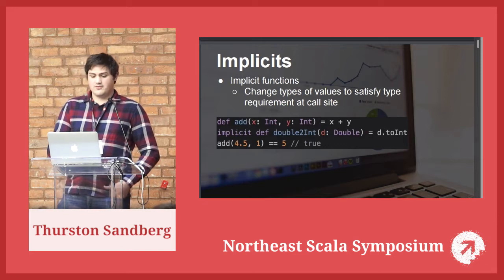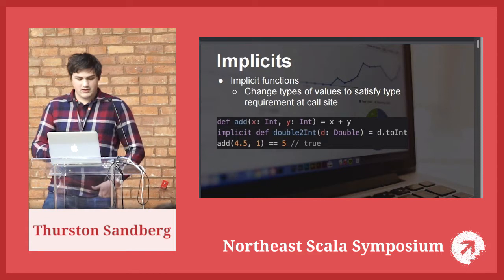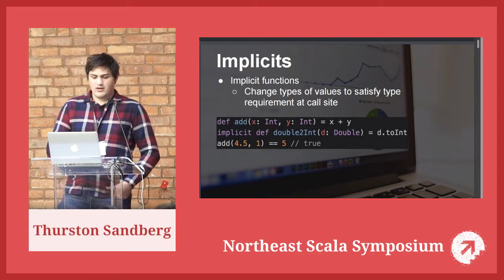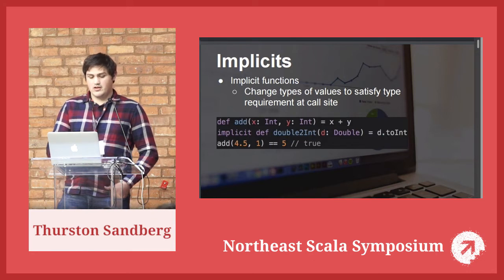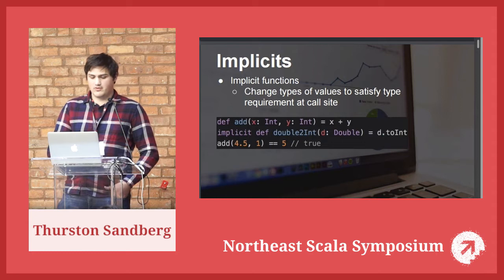Next is implicit functions. These allow for transparent transformation of types. If you have an add function with two ints and an implicit function in scope that converts a double to an int, if you try to use that add function with a double, it'll implicitly call that conversion — rounding down — and you get four plus one, which is five.